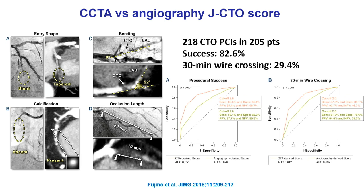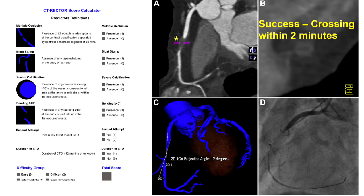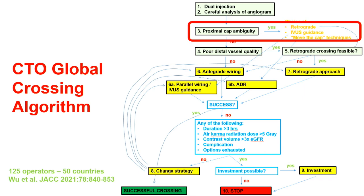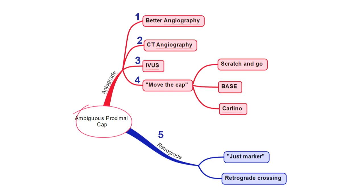The third key step is understanding the proximal cap — do you know where the CTO starts? If there is ambiguity, different techniques resolve it: the retrograde approach, IVUS guidance, or the 'move the cap' technique. An RCA CTO example: with a side branch at the proximal cap, it's hard to know where the lesion starts, requiring different techniques to figure it out. The fourth step is evaluating the distal vessel — a large, disease-free distal vessel makes crossing easier.